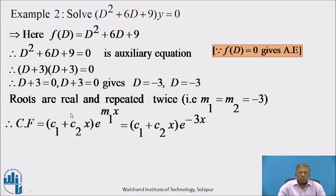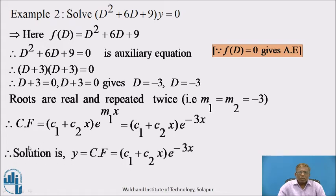Since it is a homogeneous equation, CF will be its solution. Therefore the solution is y = CF = (c₁ + c₂x)e^(−3x) is the required solution.